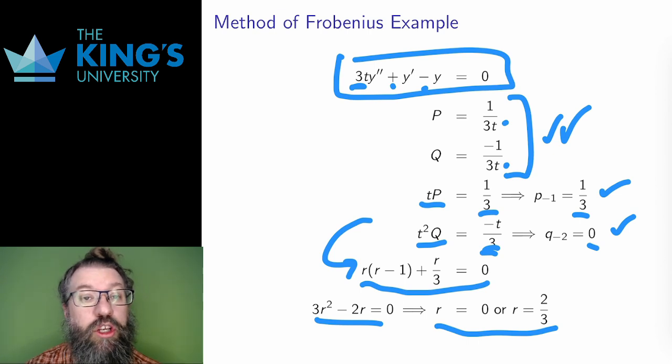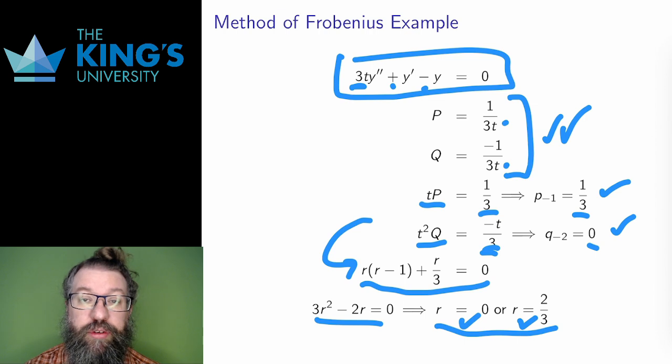So from here on, I'm going to do two different series solutions. One without any extra powers, that's the r equals 0 case. One where I multiply everything by t to the 2/3, the r equals 2/3 case.